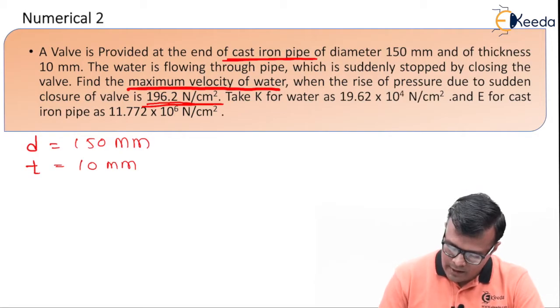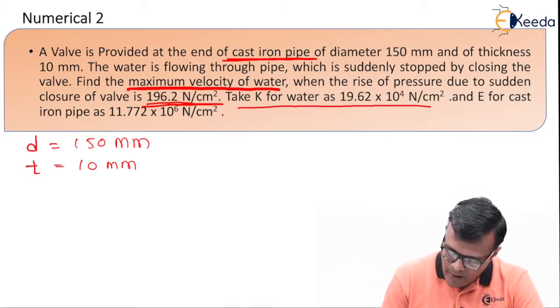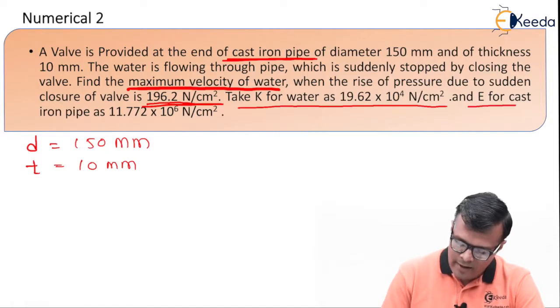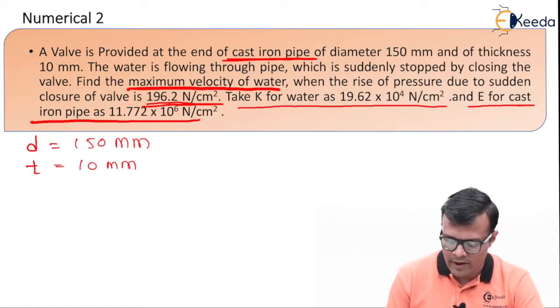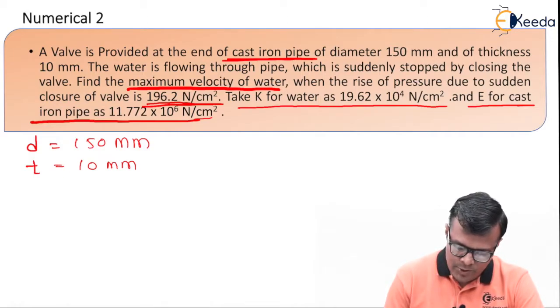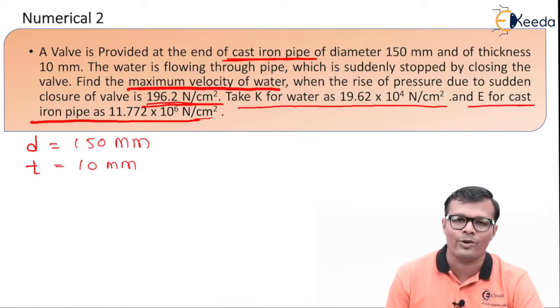To calculate velocity, they have provided extra data as K for water as 19.62 × 10^4 Newton per centimeter square, and E for cast iron pipe as 11.772 × 10^6 Newton per centimeter square. So all the units are in Newton per centimeter square, so we do not have any need to convert them and waste our time.